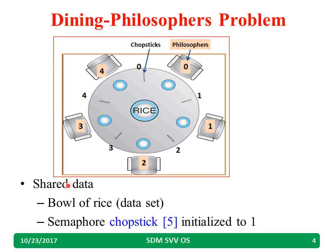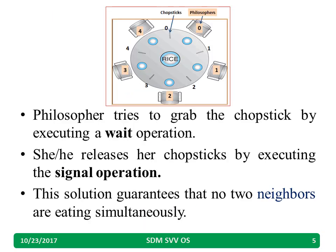In this problem we have shared data — the bowl of rice is common to all philosophers. We use 5 semaphores, declared as an array: chopstick[0], chopstick[1], chopstick[2], chopstick[3], chopstick[4], and all are initialized to 1. A philosopher tries to grab a chopstick by executing a wait operation, and once finished, releases it by executing a signal operation.